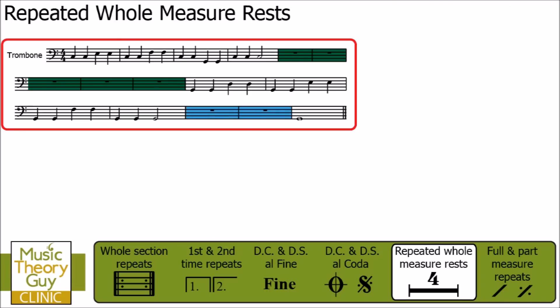Rather than writing a series of empty bars or measures, we can use this symbol — this means repeated whole measure rests. There's a number five above that thick black line, and we can use that symbol — the black line and that five — to replace those five empty bars or measures.